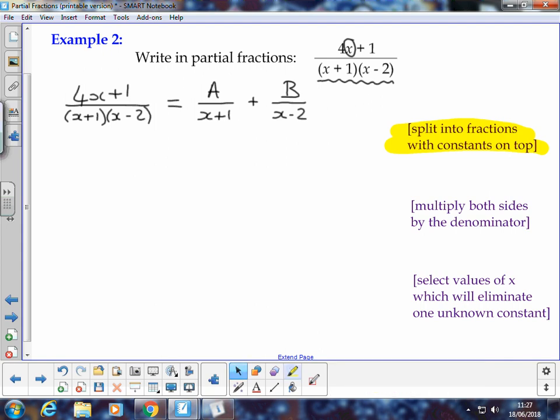Now we'll look at the next comment down. It says multiply both sides by the denominator, and the denominator in question is the original one, x plus 1 multiplied by x minus 2.